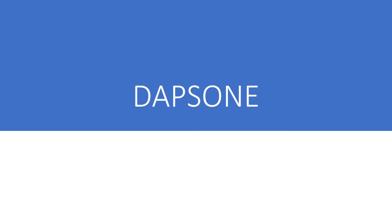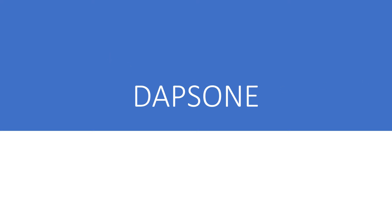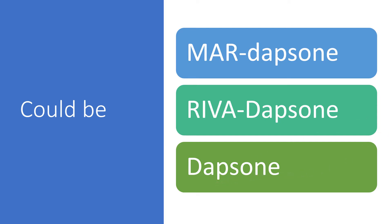Today we have Dapsone. Dapsone could come under different brand names: Dapsone, Ma Dapsone, River Dapsone, or the generic name Dapsone. Dosage forms would be tablet per oral — generic 25 mg or 100 mg.